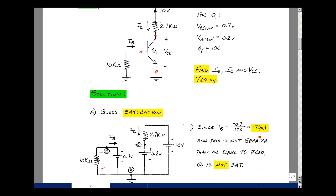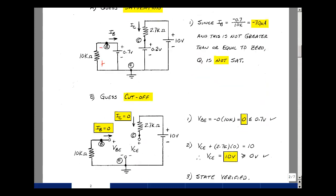Since the base current was negative, let's guess cutoff and see if that works. Assuming taking the last picture, just erasing the battery between the base and the emitter and the collector and the emitter, just labeling those voltages now, we need to show that the voltage across the base emitter is less than or equal to VB on, and that the collector and emitter is greater than or equal to 0. Now there's no current coming in the base, no current coming in the collector because of the open circuit.